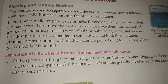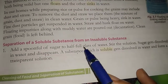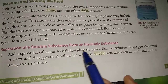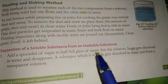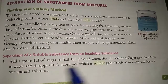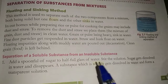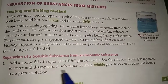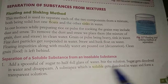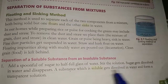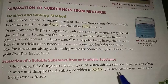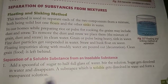Let us understand. Add a spoonful of sugar to a half-full glass of water and stir the solution. Sugar gets dissolved in water and disappears. We take a spoon, add sugar to the water, stir it, and the sugar disappears — it gets dissolved. A substance which is soluble gets dissolved in water and forms a transparent solution.